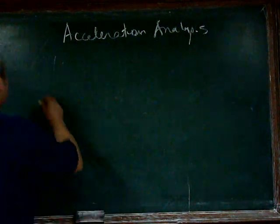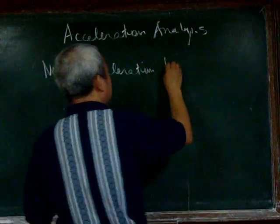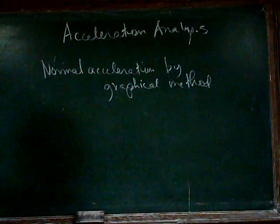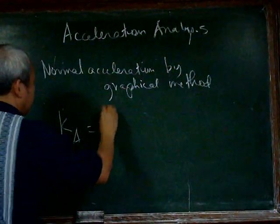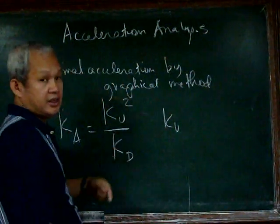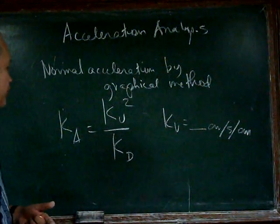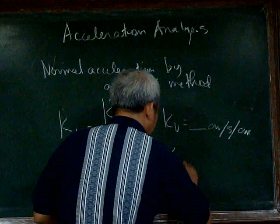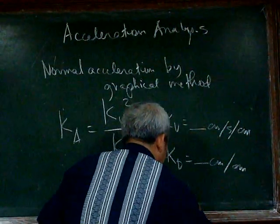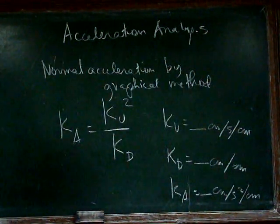One important thing when we use the strict graphical method of determining normal acceleration is about the scale. The scale for the acceleration should be given by k sub v, which is the scale for the velocity in centimeters per second per centimeter in the drawing, and the distance in centimeters per centimeter in the drawing. The acceleration should be in centimeters per second per second per centimeter in the drawing.